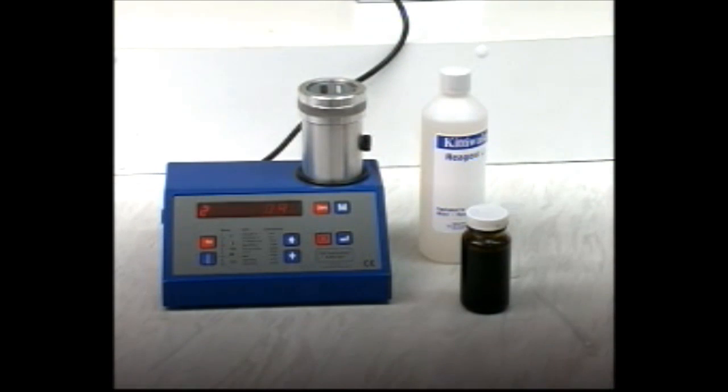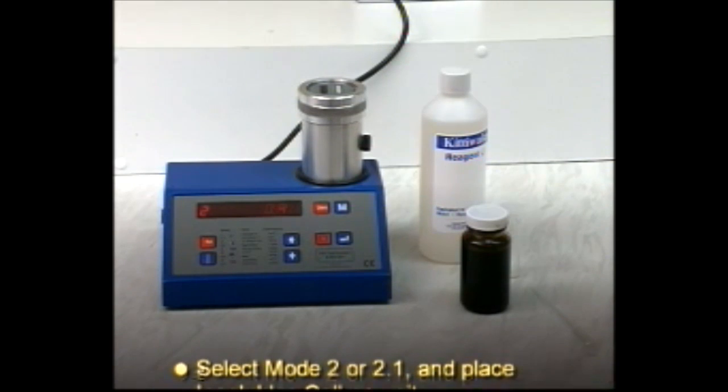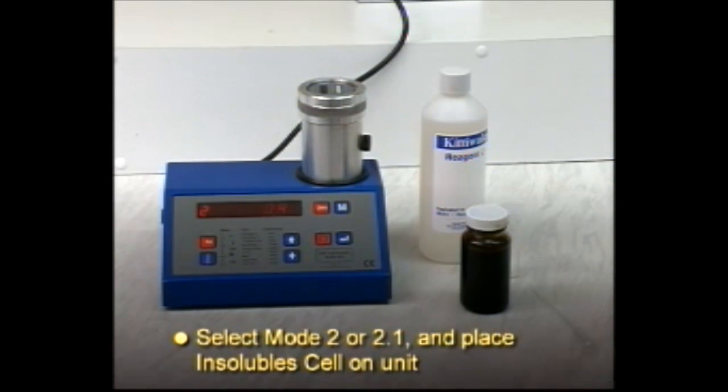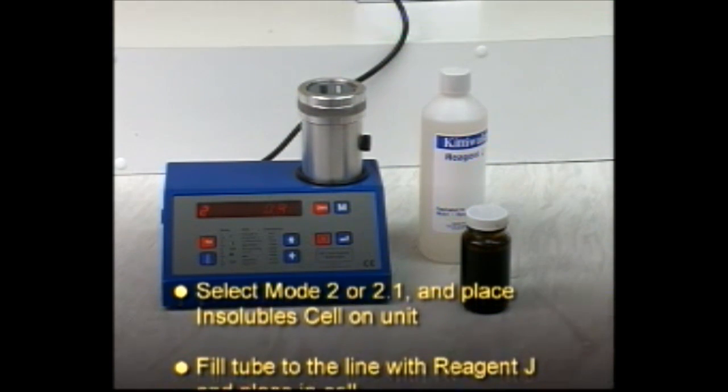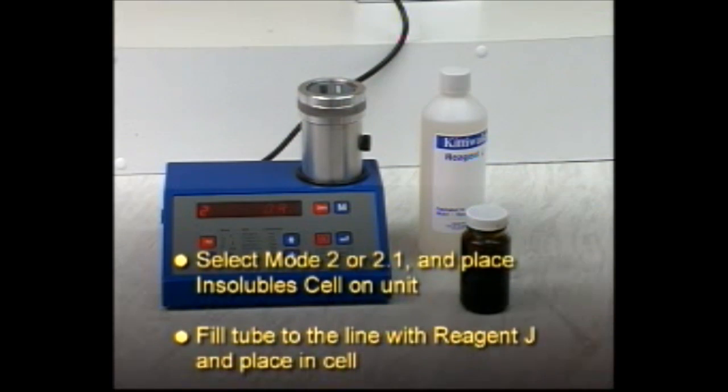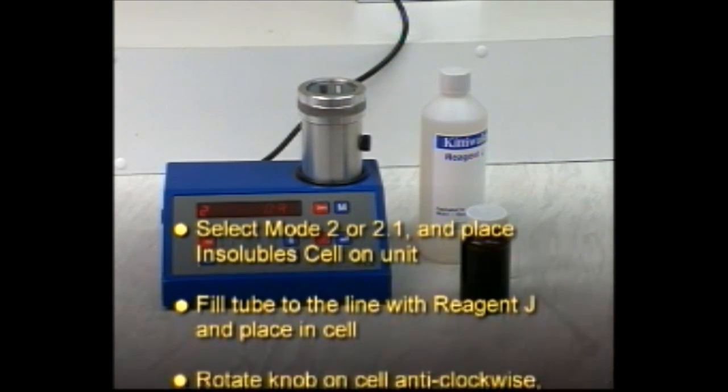To summarize, select mode 2 or 2.1. Place the insoluble cell on the unit. Fill the tube to the line with reagent J and place it in the cell.